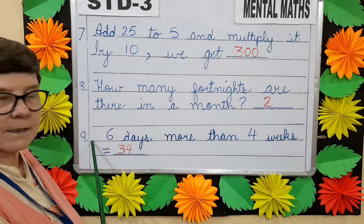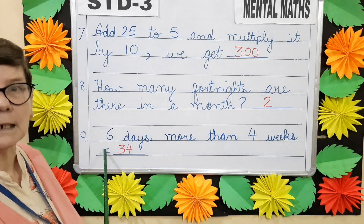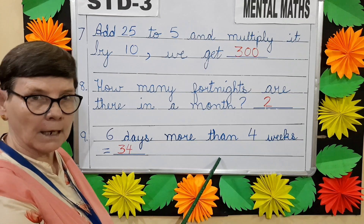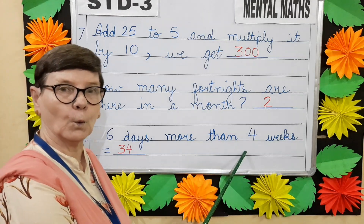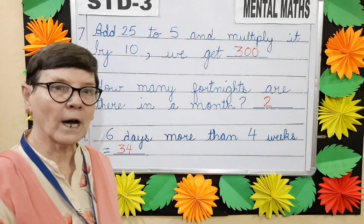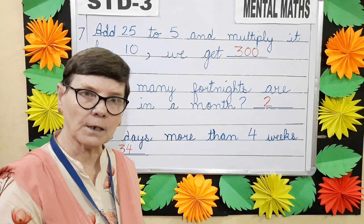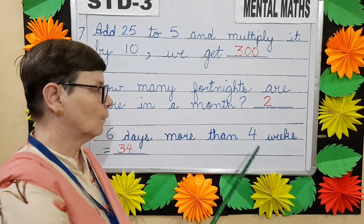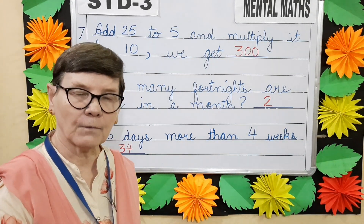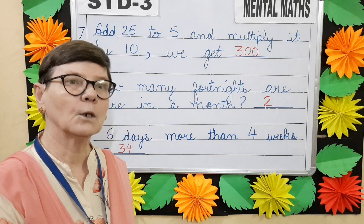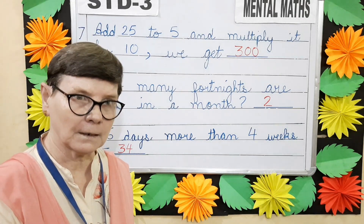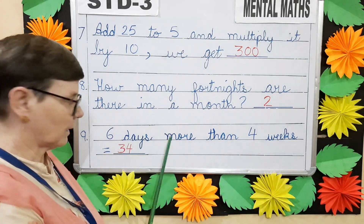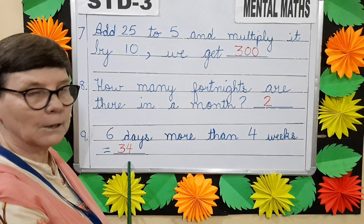Question number nine. Six days more than four weeks. One week has how many days children? Seven. Therefore four weeks: seven into four will give you twenty-eight. Twenty-eight plus six will give you thirty-four.